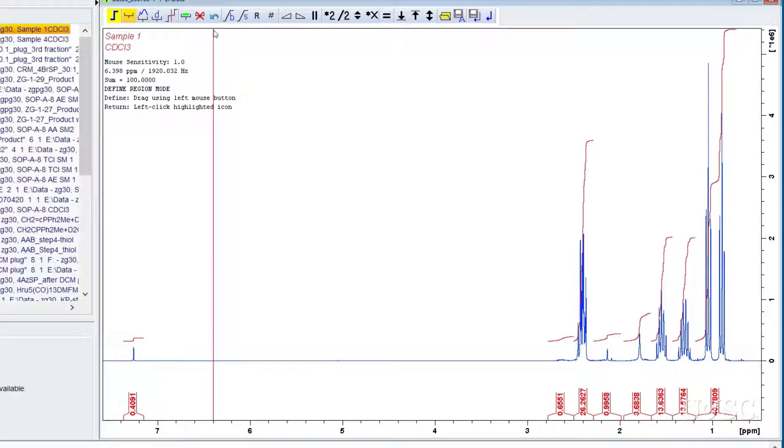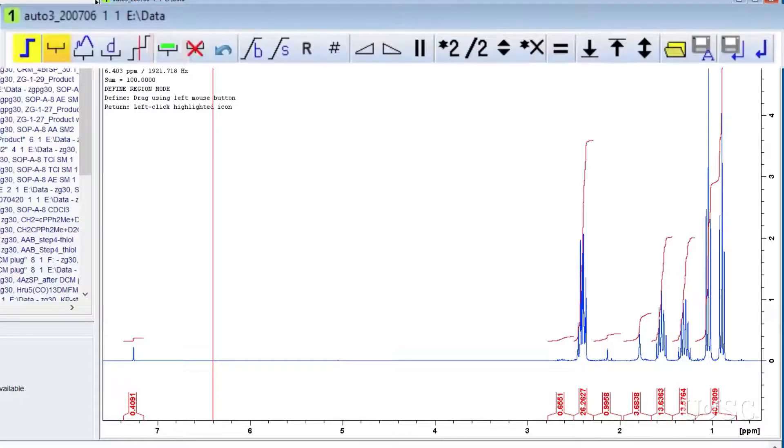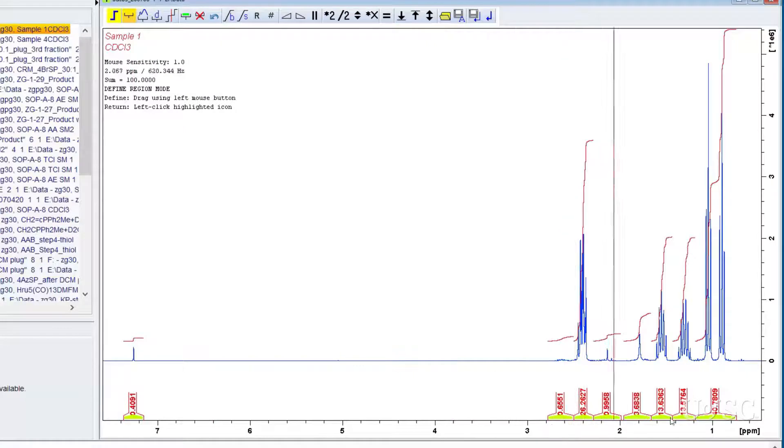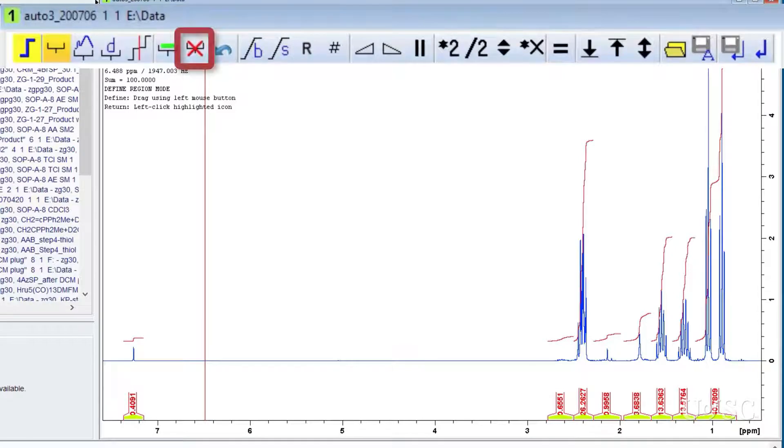If you want to delete all the current integrals you first have to select them. To do this click on the icon with a bracket around a green rectangle. Once selected you should see green highlights at the bottom of the integral regions under the displayed spectrum.